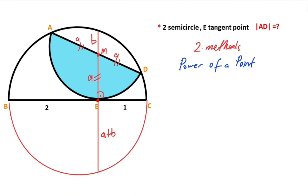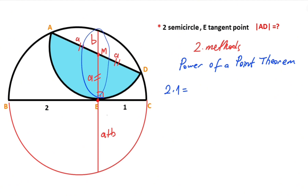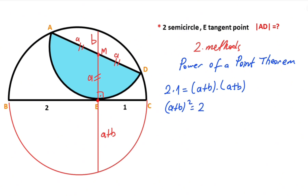Now if we apply the Power of a Point theorem for point E: two times one must equal a plus b times a plus b — that is, a plus b whole squared must equal two units. Therefore: a squared plus 2ab plus b squared equals two.